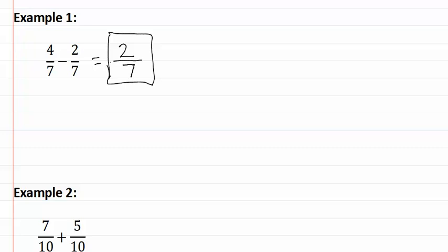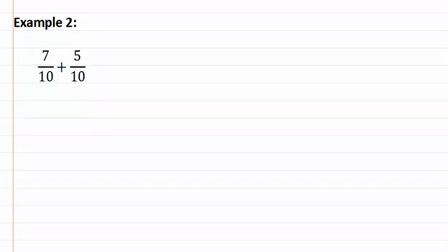Let's look at example two. Example two is seven-tenths plus five-tenths. Remember, we add the numerators: seven plus five is twelve, and then we keep the denominators the same, ten.